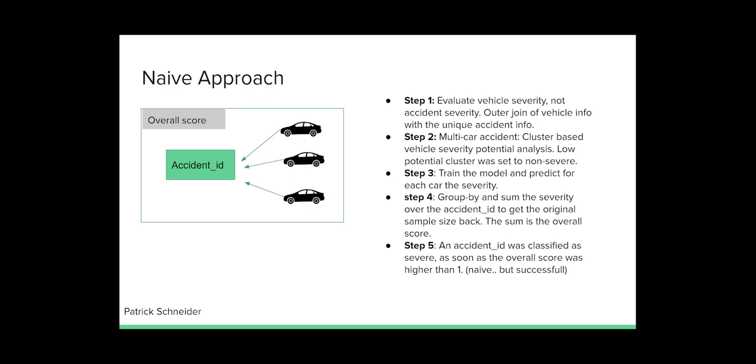An accident_id was classified as severe, as soon as the summed score was higher than one. This translates to that in an accident with three vehicles, if one vehicle was classified as severe, the whole accident was classified as severe.